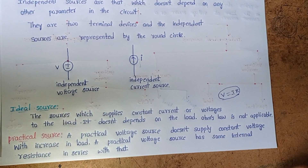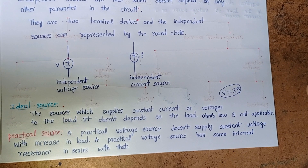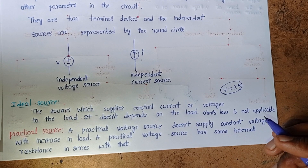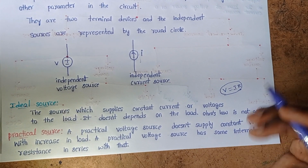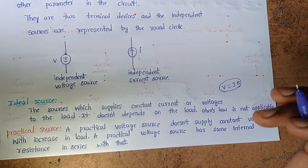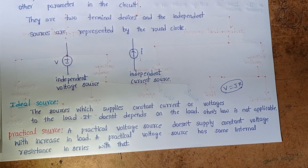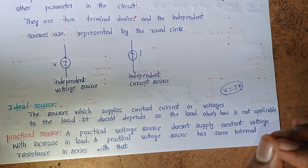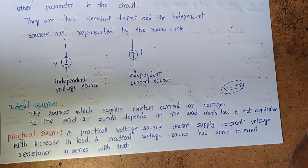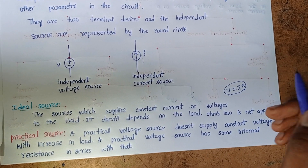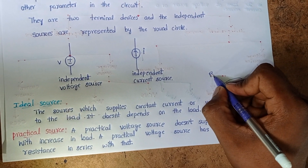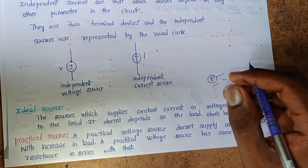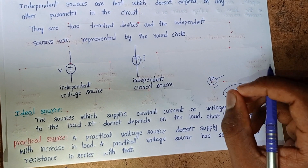Next is practical sources. A practical voltage source does not supply constant voltage with an increase in load. In practical cases we have some resistance in the conductor, and due to that resistance a voltage drop is present.